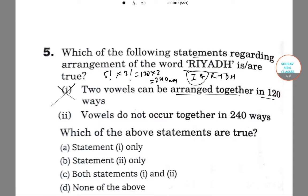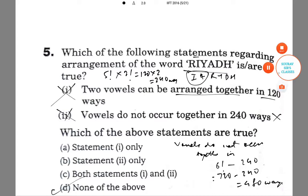And vowels do not occur in 240 ways, this is also incorrect. Because vowels do not occur together in 6 factorial minus 240, that is 720 minus 240 is equal to 480 ways. So none of the above are correct.